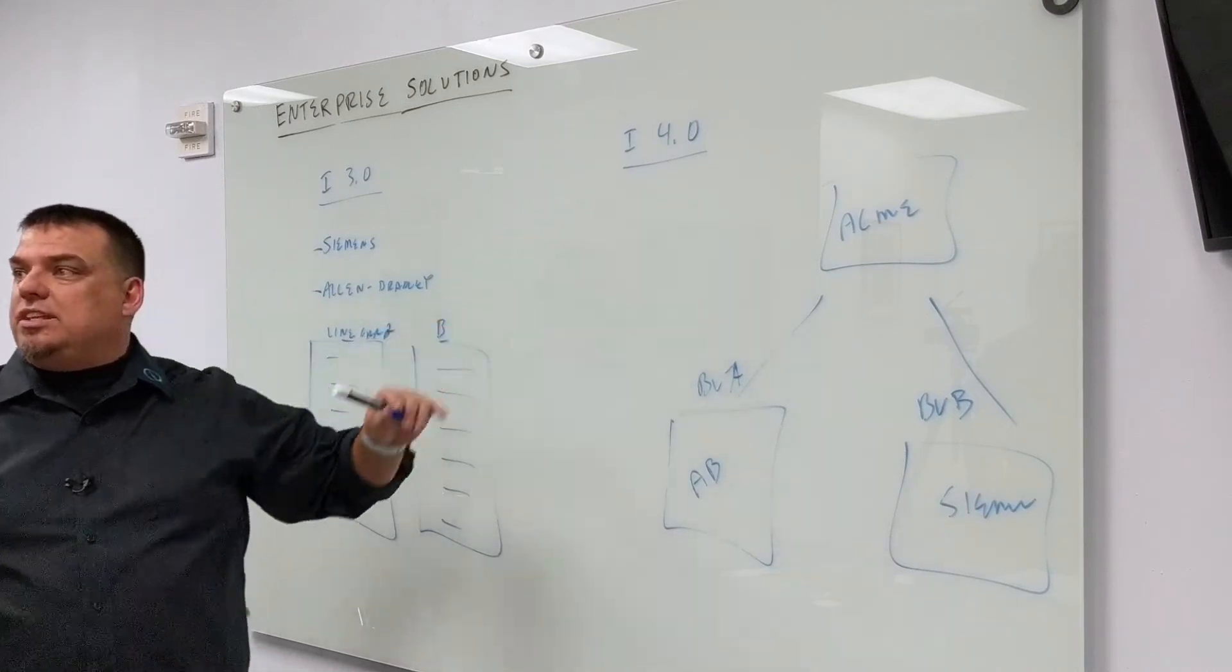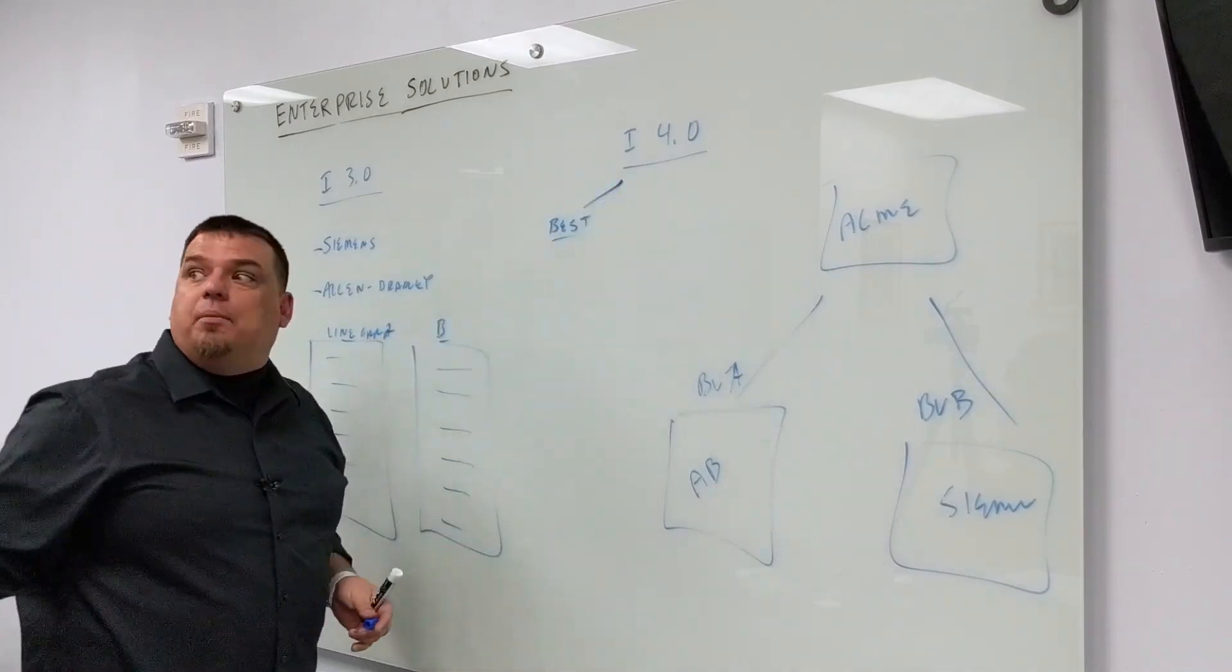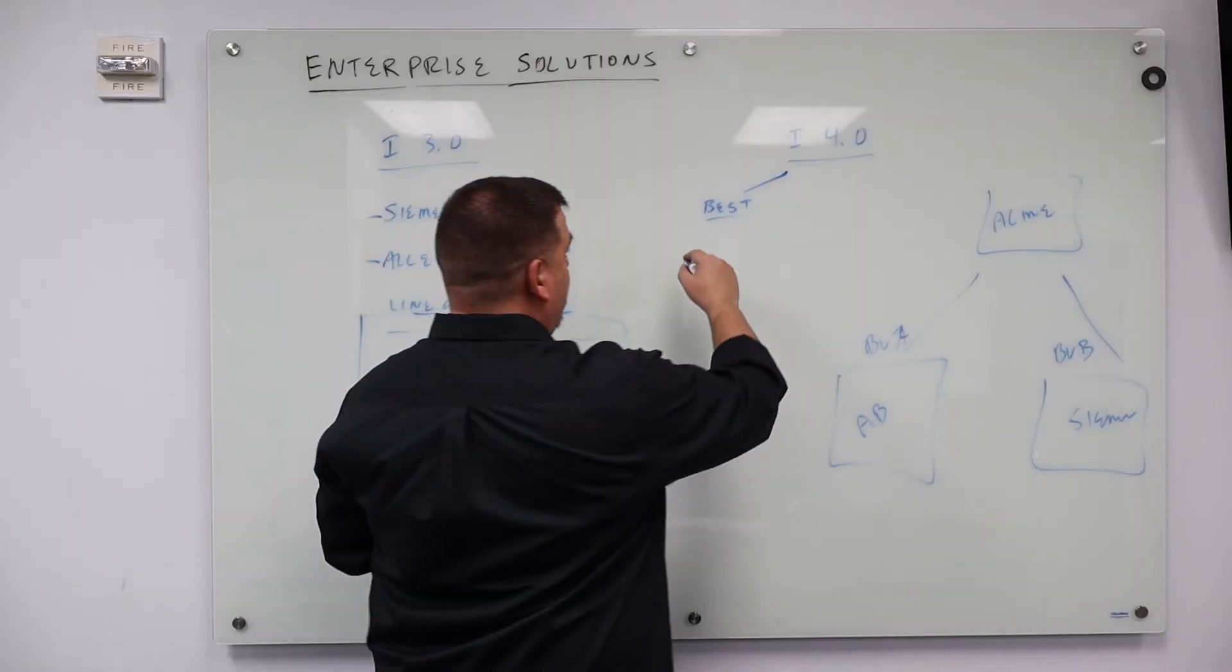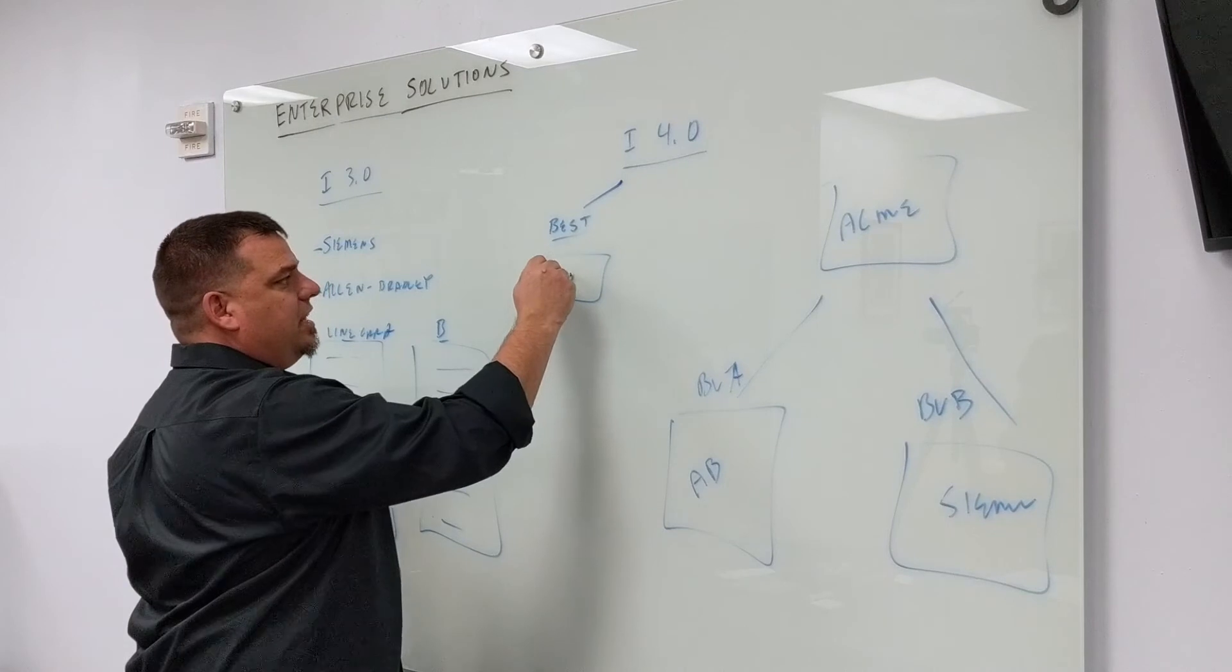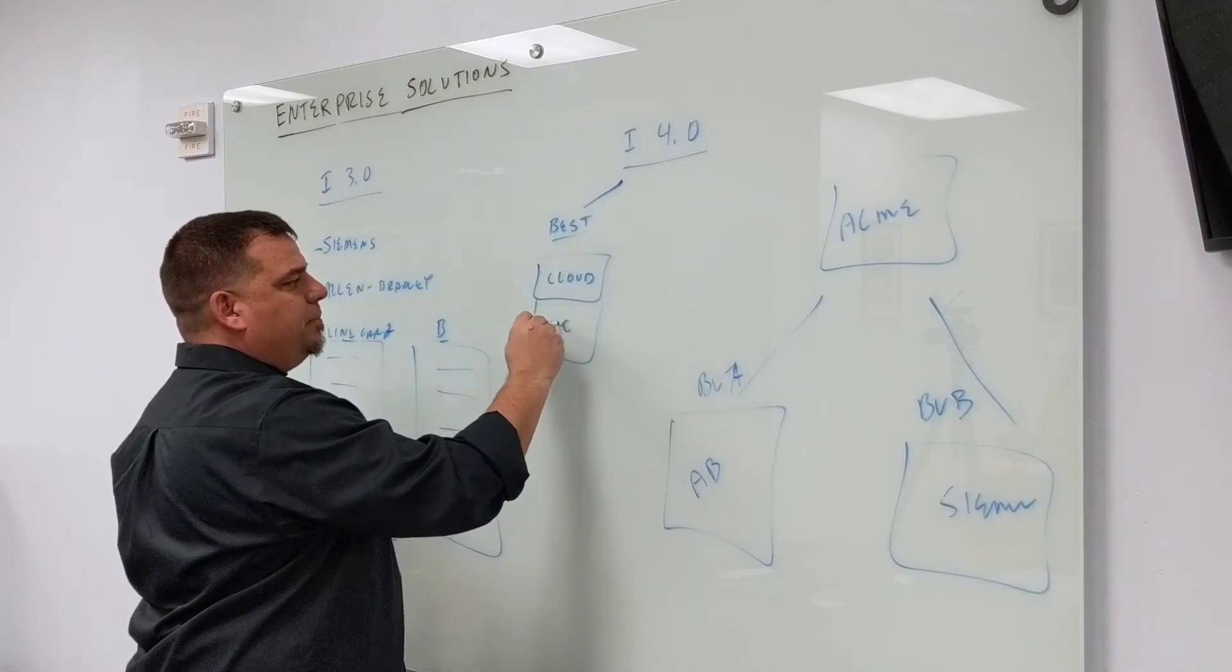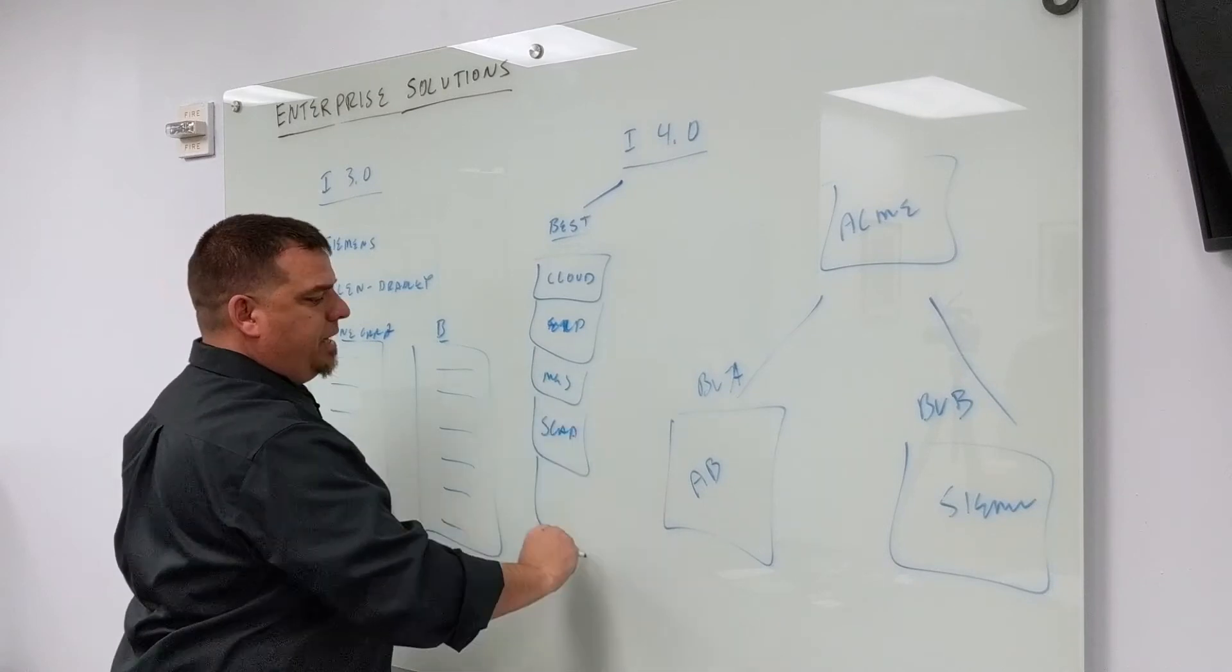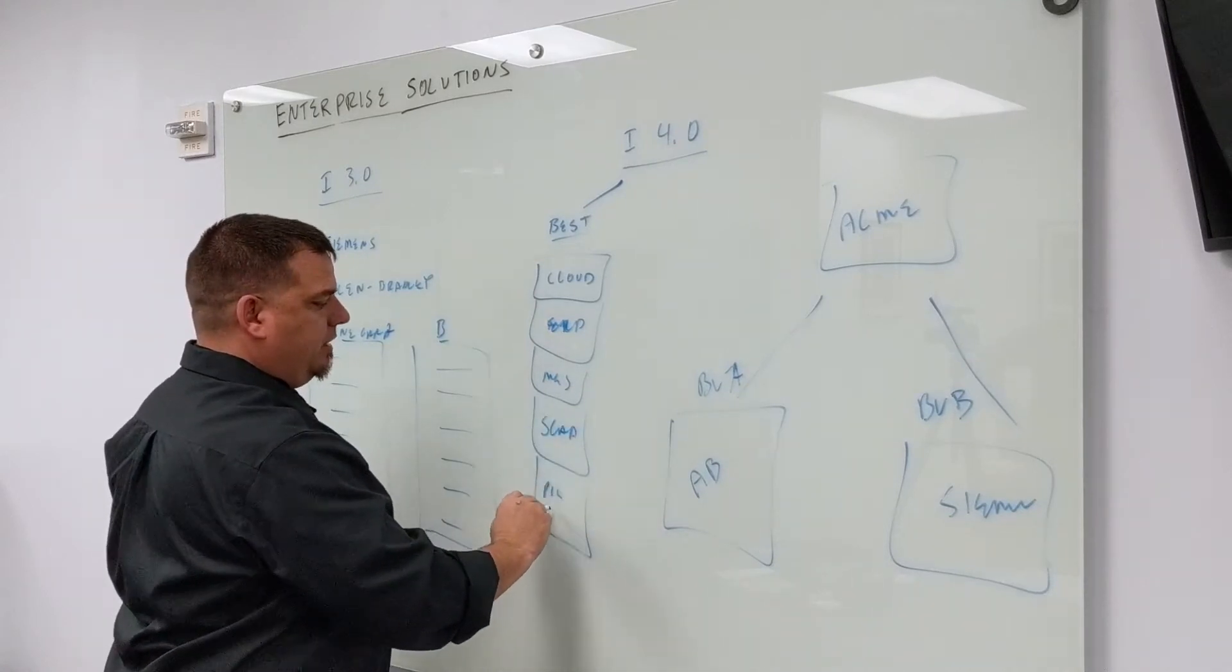But when you're doing enterprise solutions, you're going to be using an Industry 4.0 distributor. And what is that Industry 4.0 distributor going to sell? What's best? They're going to sell best. Best in class in each of the layers. They're going to sell best in class in cloud, best in class ERP, best in class in MES, best in class in SCADA.